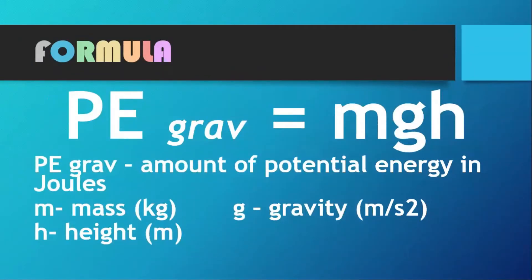To calculate gravitational potential energy, multiply mass, gravity, and height. The unit of potential energy is joules; mass is in kilograms; height is in meters; and gravity is in meters per second squared. Since we are on Earth, we use 10 m/s² as the value for gravity.